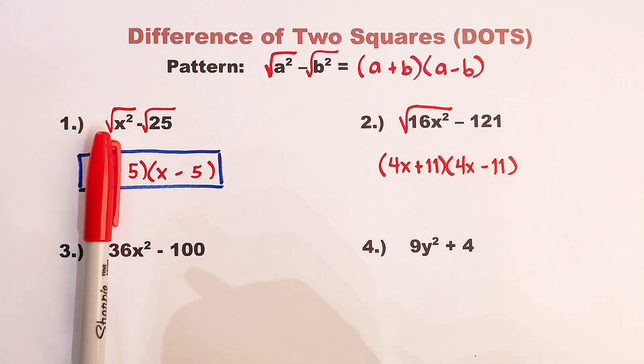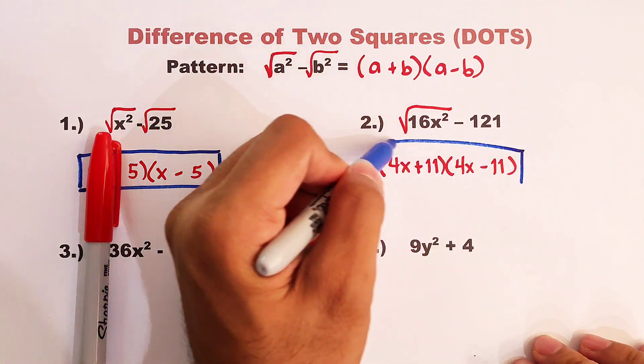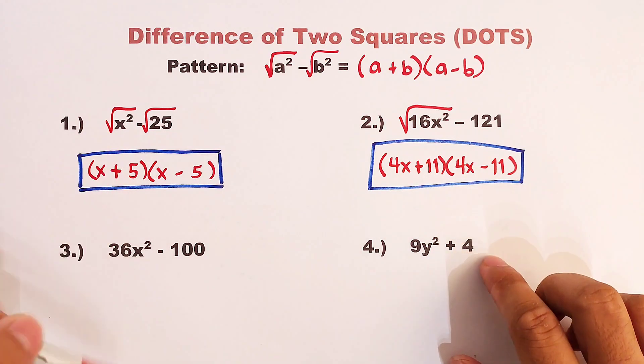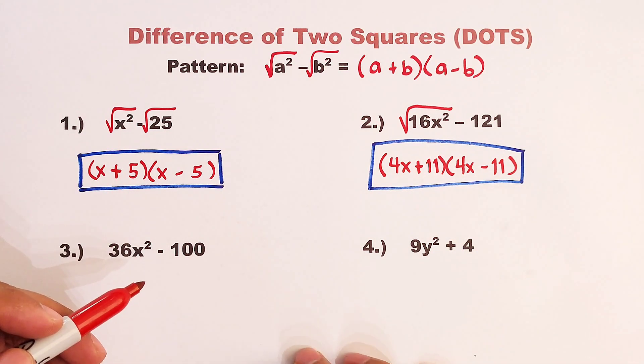And now the factors are 4x plus 11 times 4x minus 11. Now let's move on with the third example.